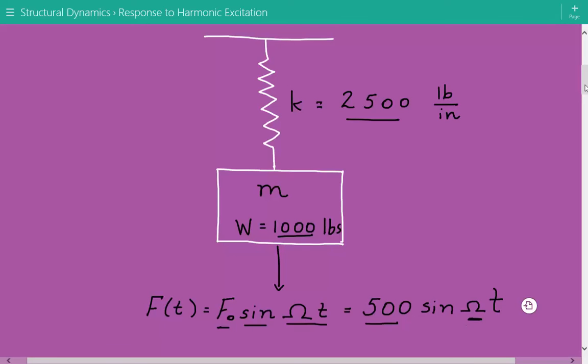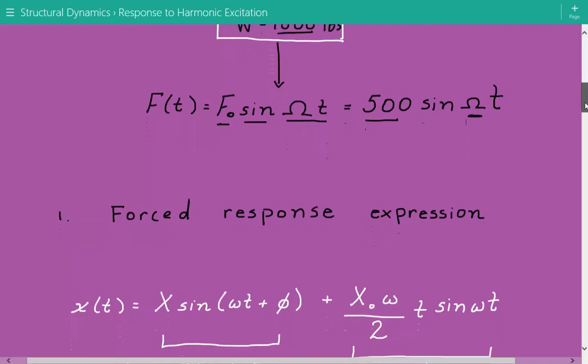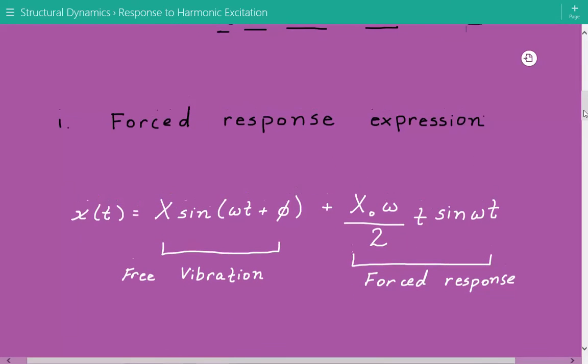Coming back to our structural dynamics problem. The first thing we're going to do is look at the mathematical expression for the displacement of the mass. We have an undamped spring mass system excited by some harmonic force. We have a situation of resonance, which means that the circular natural frequency of the system is equal to the frequency of the forcing function.